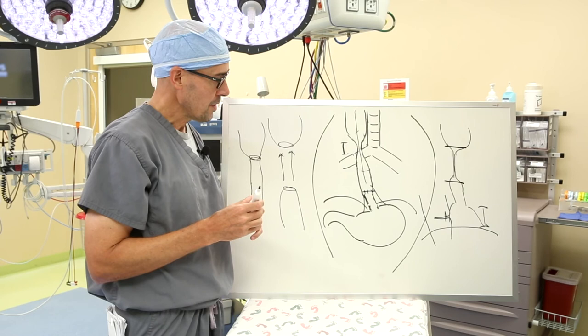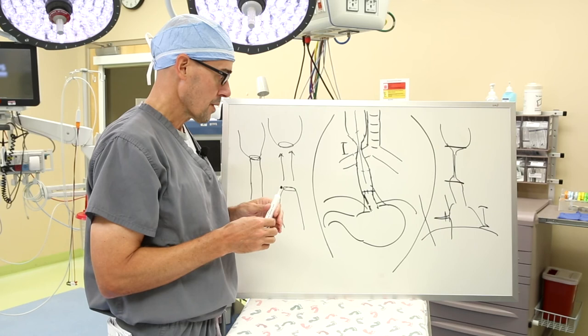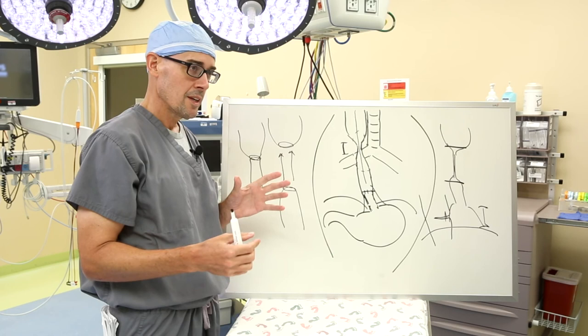What we found is if you take a comprehensive approach and look at all the different types of strictures and different aspects and options you have, we would have a very high success rate to find a solution so that you're not dependent on recurrent dilations and finally get to a place where you can eat well by mouth without getting food stuck or other problems.